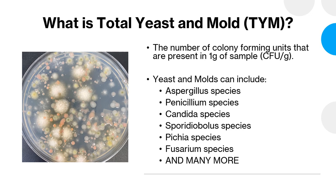What you don't want to happen is you don't want to use a method that's only going to allow one species of yeast and mold to grow, but you also don't want to use a method that will result in microbes other than total yeast and mold being quantified. For example, with some of the plating media that's available, it allows bacteria to grow in addition to yeast and mold. If that happens, the results could be skewed high, and it can lead to an over-quantification of what's actually present in the sample.